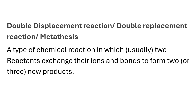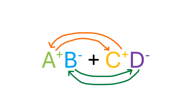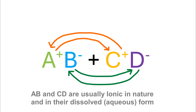A typical double displacement reaction has the general equation AB + CD → AD + CB. In a double displacement reaction, the positively charged cations of one reactant and the negatively charged anions of the other reactant switch places and form new bonds to create new compounds. Double displacement reactions generally occur between two ionic compounds dissolved in an aqueous medium.